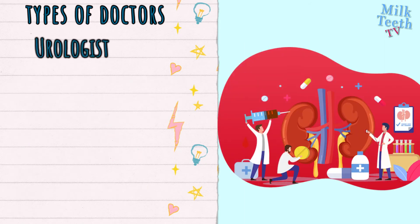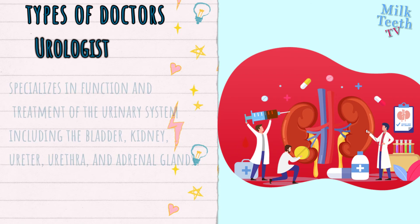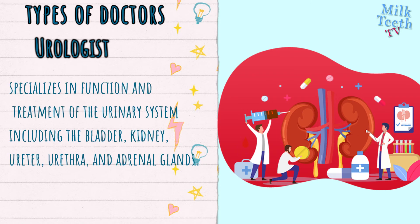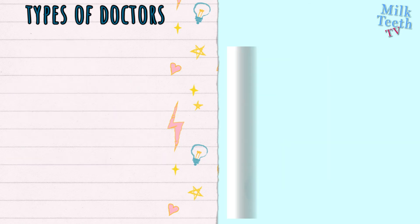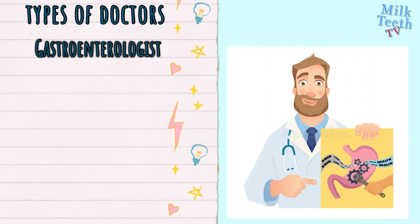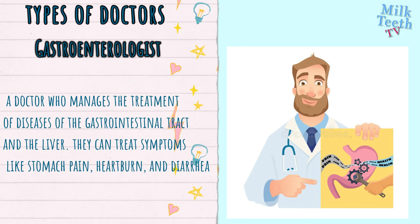Urologist: specializes in the function and treatment of the urinary system, including the bladder, kidneys, ureter, urethra, and adrenal glands. Gastroenterologist: a doctor who manages the treatment of diseases of the gastrointestinal tract and the liver.